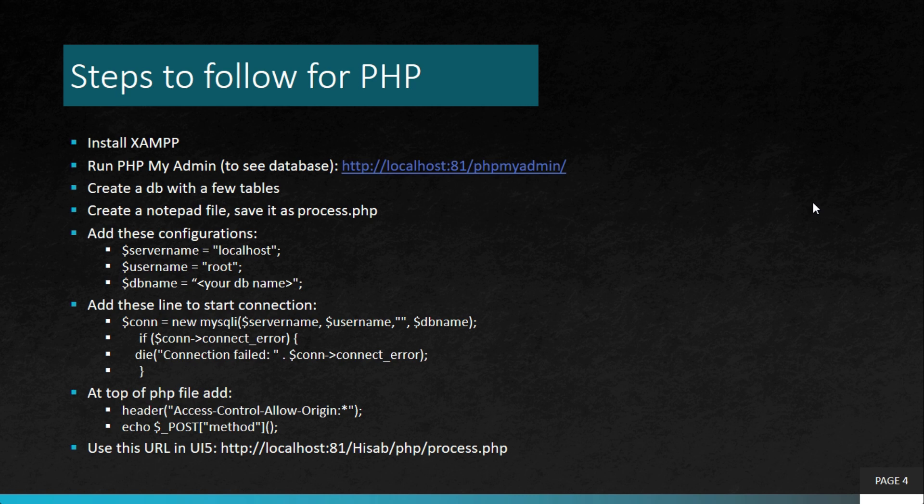Going further into the steps: the very first thing you need to do is install XAMPP. Once done, you run phpMyAdmin. In our use case our localhost is running at port 81, but by default it is 80. So your URL will be: http://localhost:80/phpmyadmin. Once you run this URL you will be able to see the SQL console.